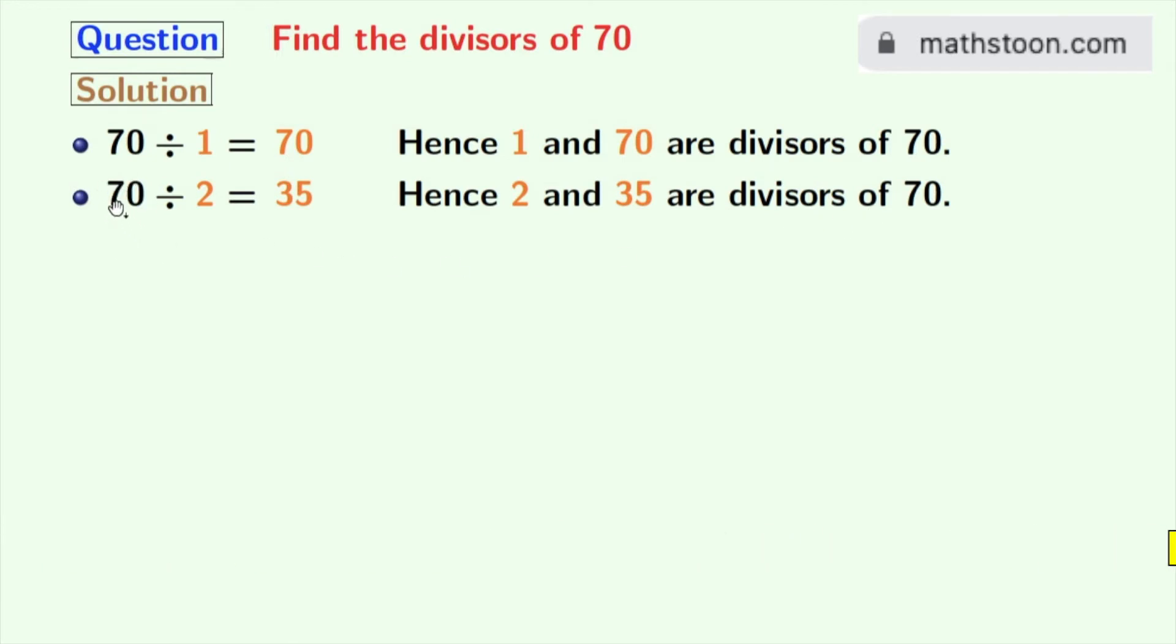70 divided by 5 is 14, hence 5 and 14 are the divisors of 70.